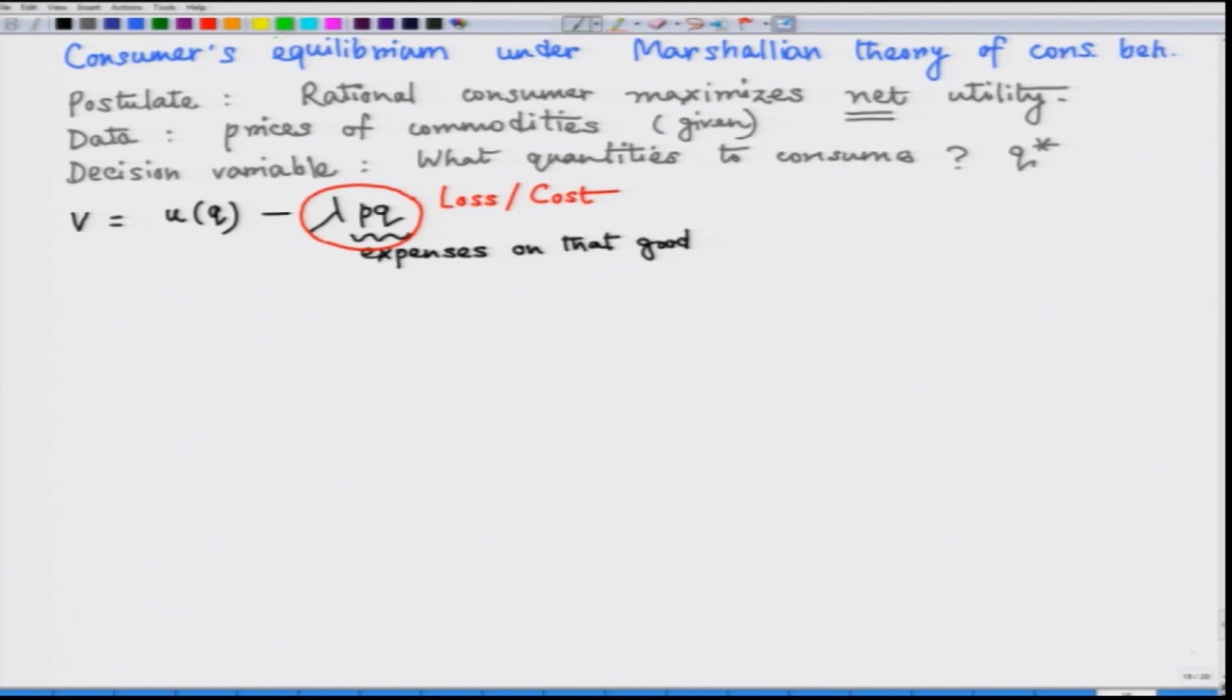There is a benefit portion here in front, so this is the gain or benefit and V needs to be maximized with the decision variable. The net utility function V has to be maximized with respect to the decision variable Q.